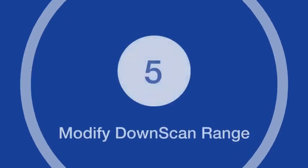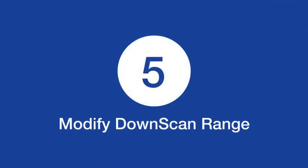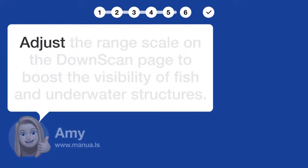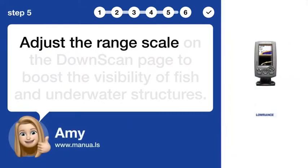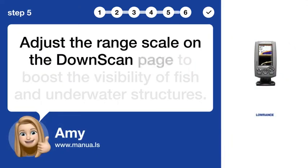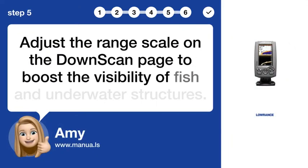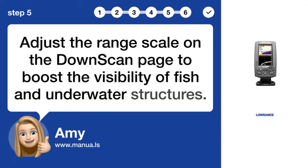Step 5: Modify downscan range. Adjust the range scale on the downscan page to boost the visibility of fish and underwater structures.